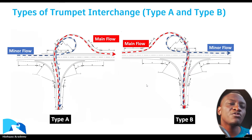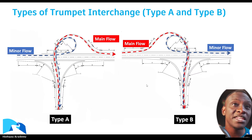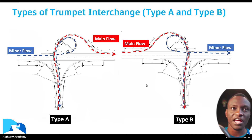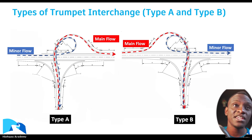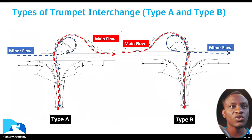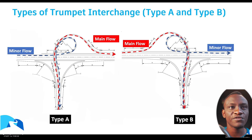If the traffic coming from the motorway that's terminating into the other motorway is higher, then you go for a Type A interchange. This is chosen because it has a much higher level of service and a much smoother flow. When it is the minor flow, those vehicles have to use the loop, which is slower and has a lower level of service.